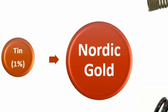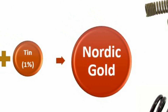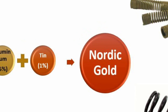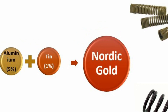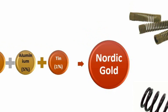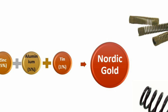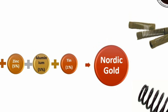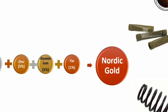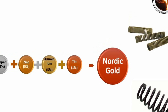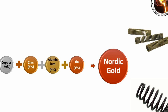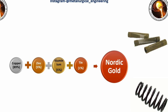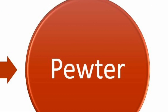Next is nordic gold. It is a copper-based alloy and aluminum, zinc, and tin are the main alloying elements. The composition of nordic gold is 89 percent copper, 5 percent aluminum, 5 percent zinc, and 1 percent tin. It is used in making euro coins.